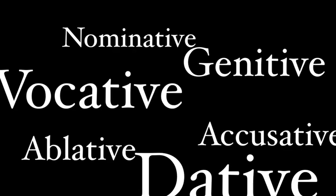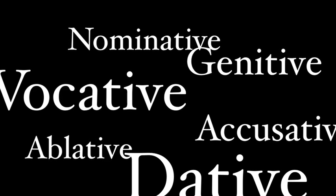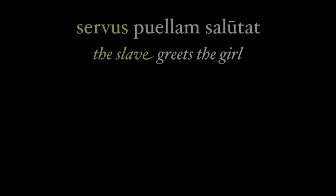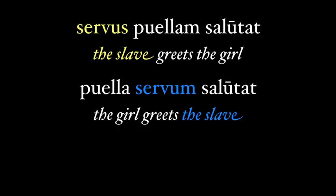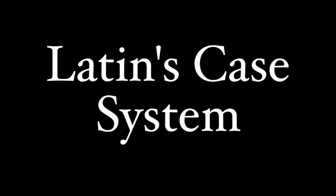The hardest part about learning Latin for native English speakers has to be the case system — how Latin changes the endings of nouns based on how that noun is used in a sentence. A noun will look different when it's the subject or the object of the verb, or when it shows possession. This video will give a basic introduction to the six main cases for the Latin noun.